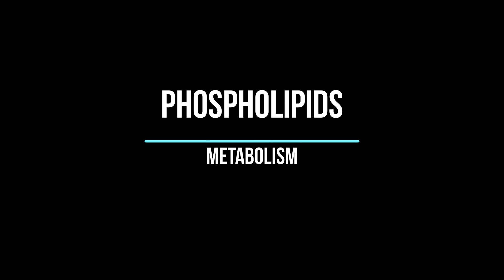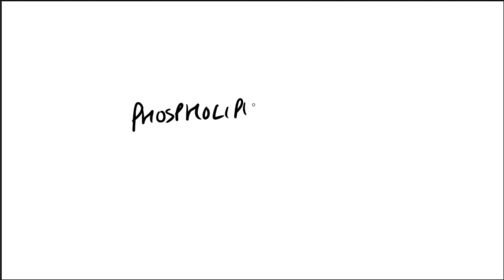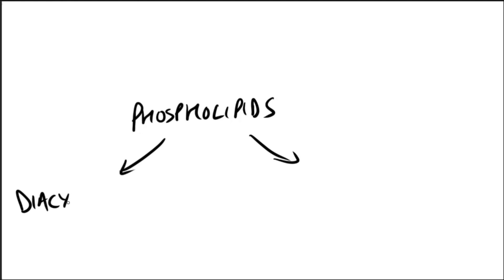Welcome back to Leila Teachers. Today we will speak about the metabolism of phospholipids. Phospholipids are polar ionic compounds composed of an alcohol attached by a phosphodiester bridge to either diacylglycerol or sphingosine. When attached to diacylglycerol they are called phosphoglycerides or glycerophospholipids, and if attached to sphingosine they are sphingolipids.